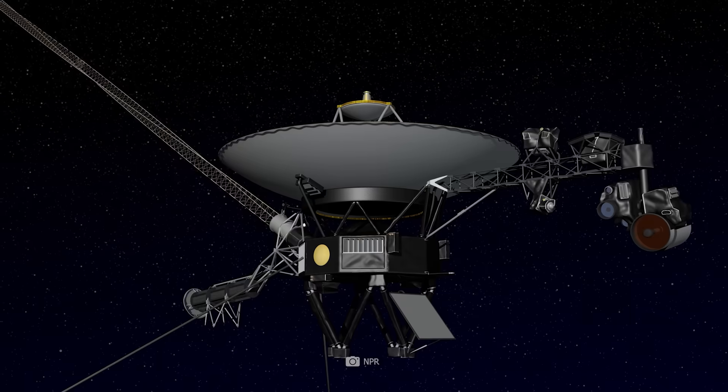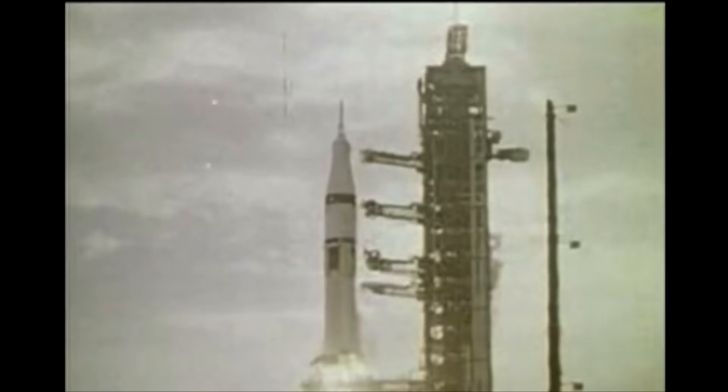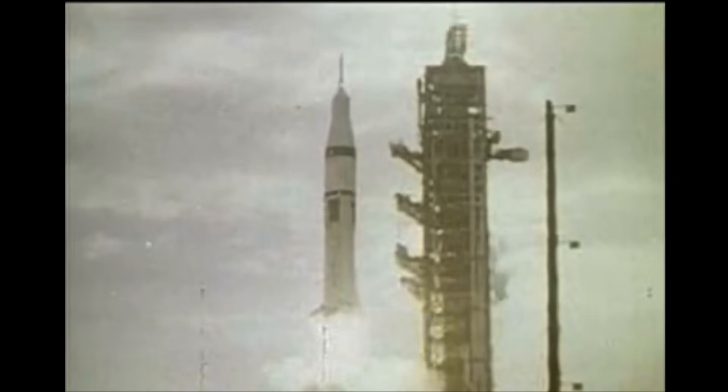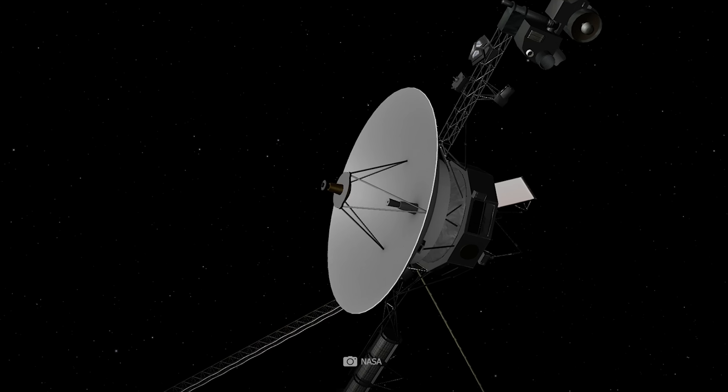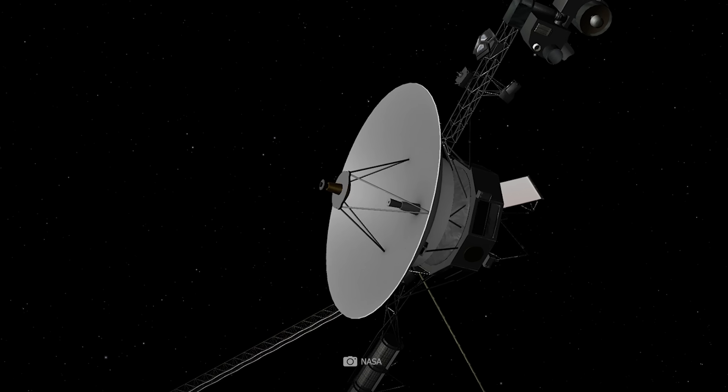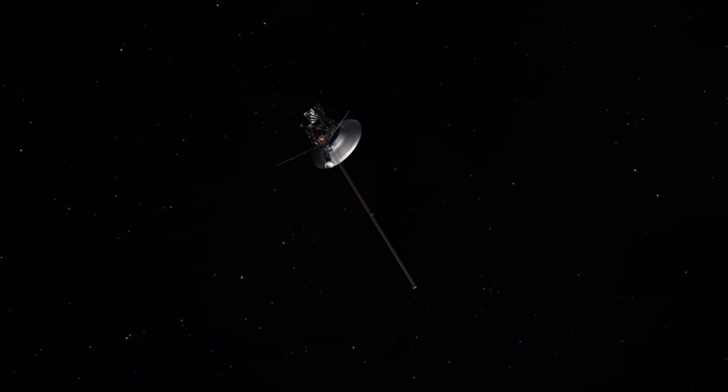Have you ever heard of the Voyager probes? Launched in space in 1977, Voyager 1 has now traveled an incredible 25 billion kilometers between itself and the Sun. And there is only one other man-made object that has ventured as far into the depths of space, Voyager 2, which is now just under 21 billion kilometers away from us.